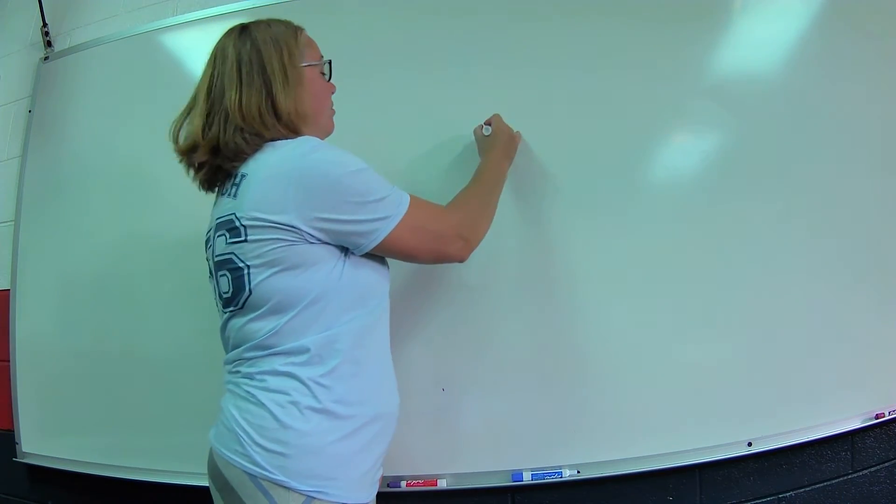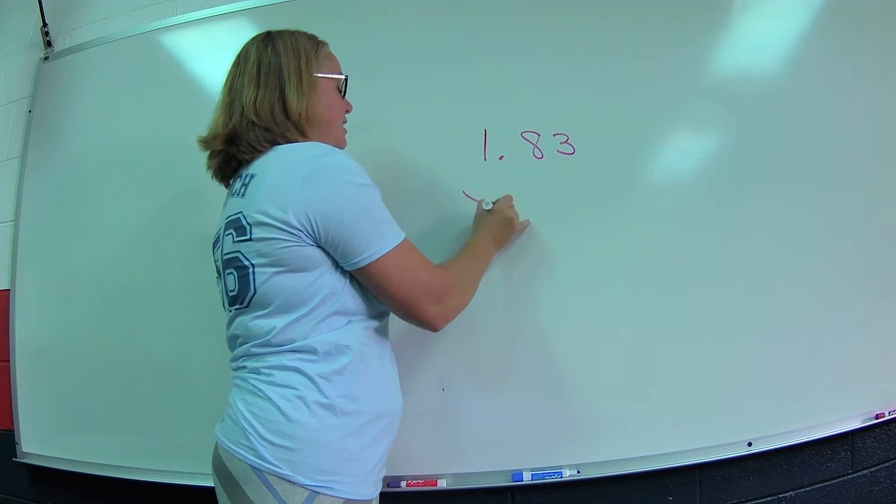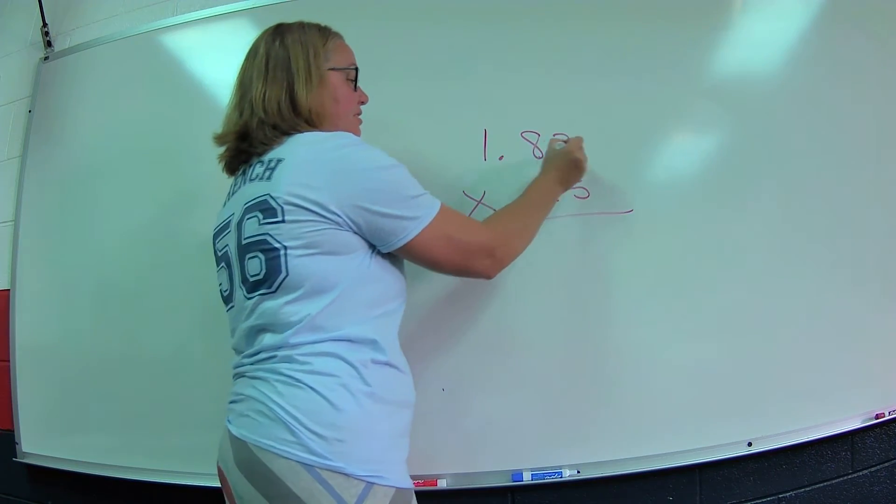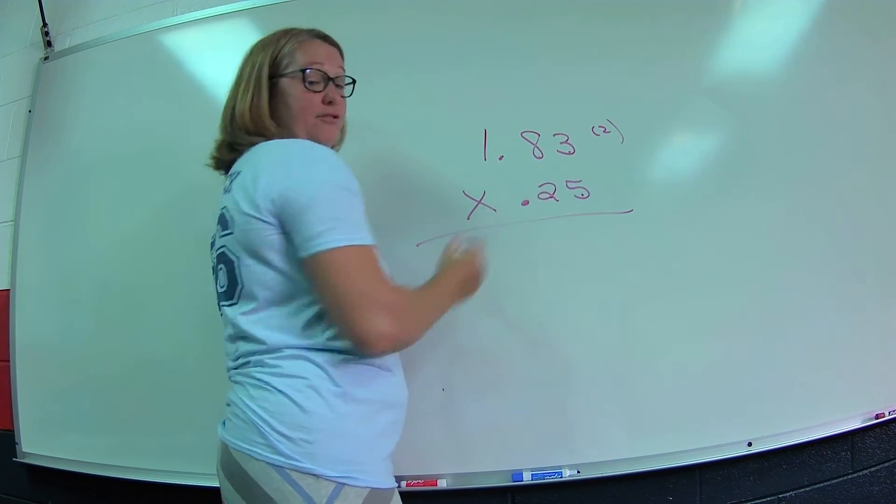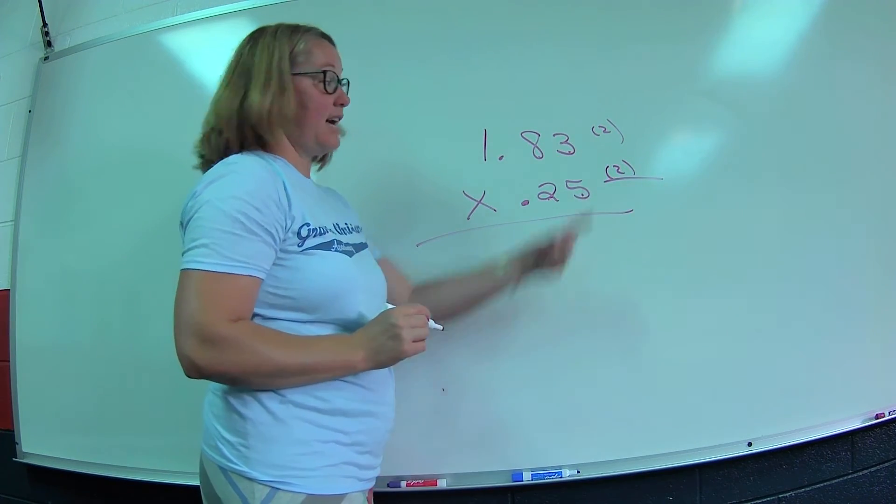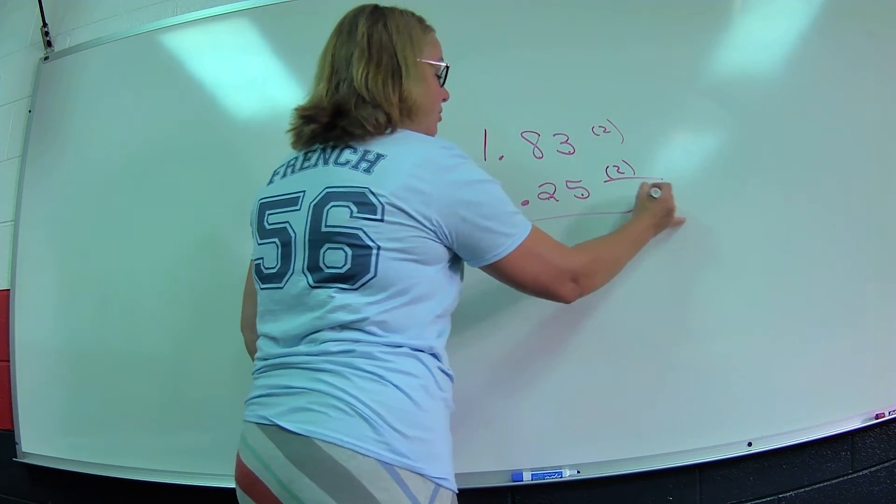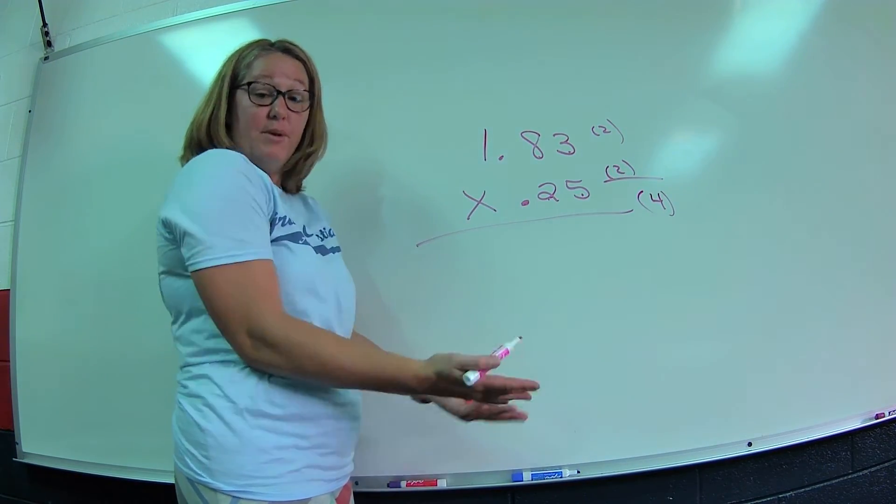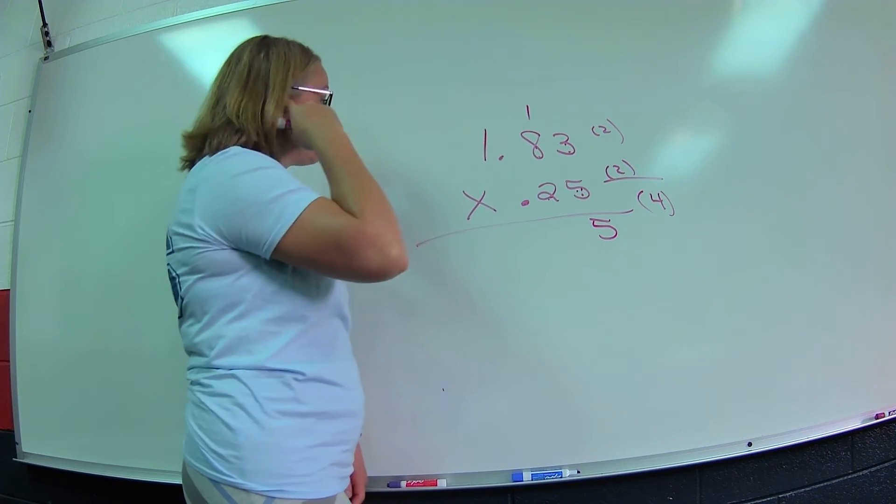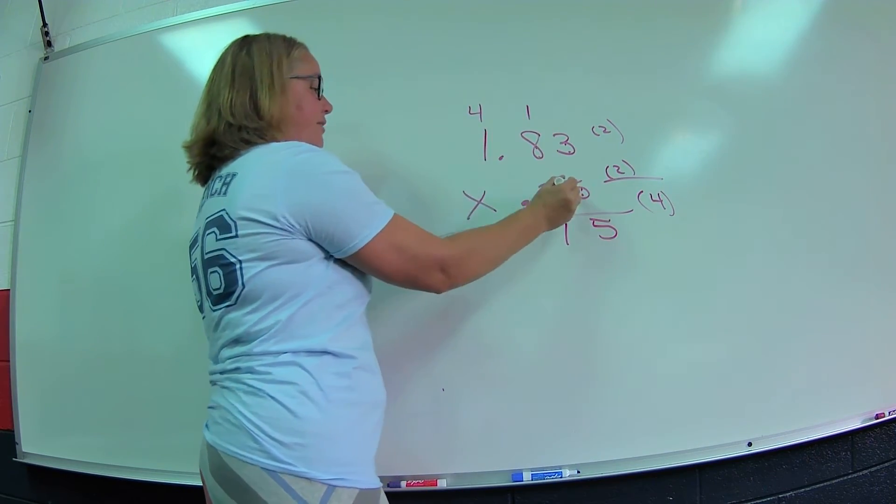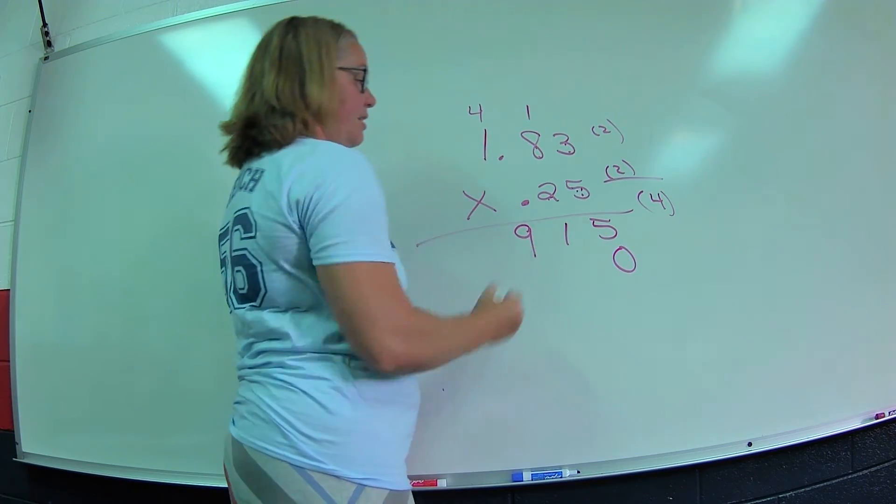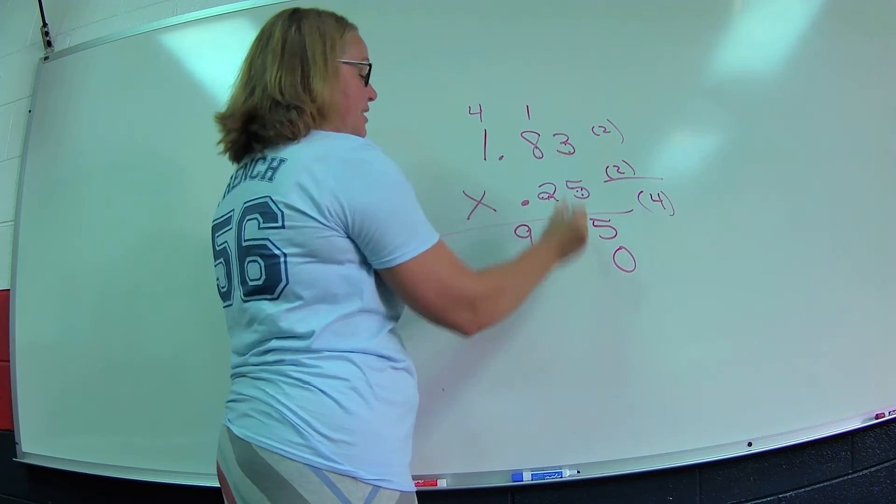If you have 1.83 times 0.25, let's count our decimal places. This one has two, and I have two right here. So now how many decimal places do you think I'm going to need? Because I have two plus two, my answer will have four. Now I do my normal multiplication. Five times three is fifteen. Five times eight is forty, plus one is forty-one. Five times one is five, plus four is nine. I put my space holder. Now I start with the second column. Two times three is six. Two times eight is sixteen. Two times one is two, plus one is three.